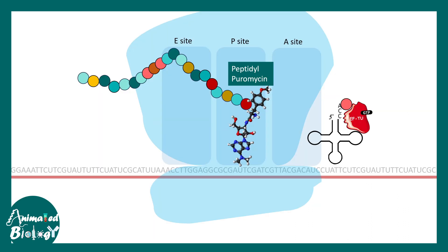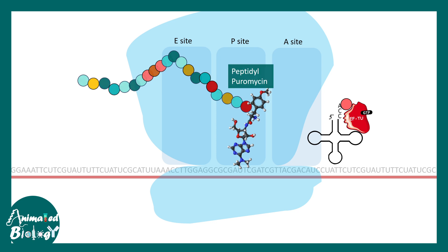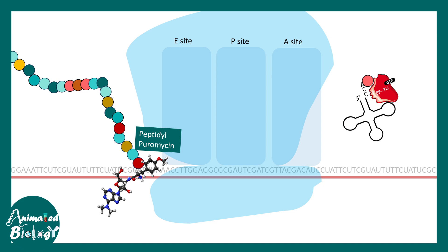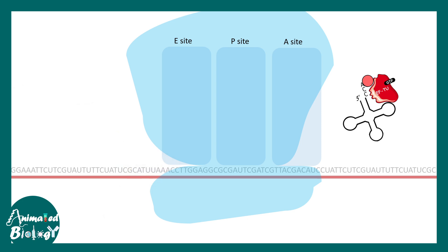Peptidyl puromycin does not hold into the ribosome properly, so it detaches and dislodges from the ribosome. Thereby peptide synthesis is blocked, full-length peptide cannot be synthesized, and the bacteria eventually die. This is exactly the mechanism of how puromycin works.